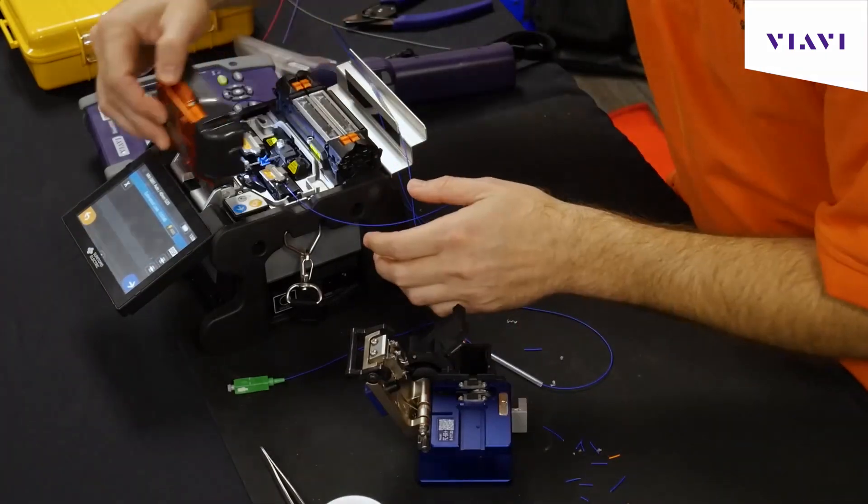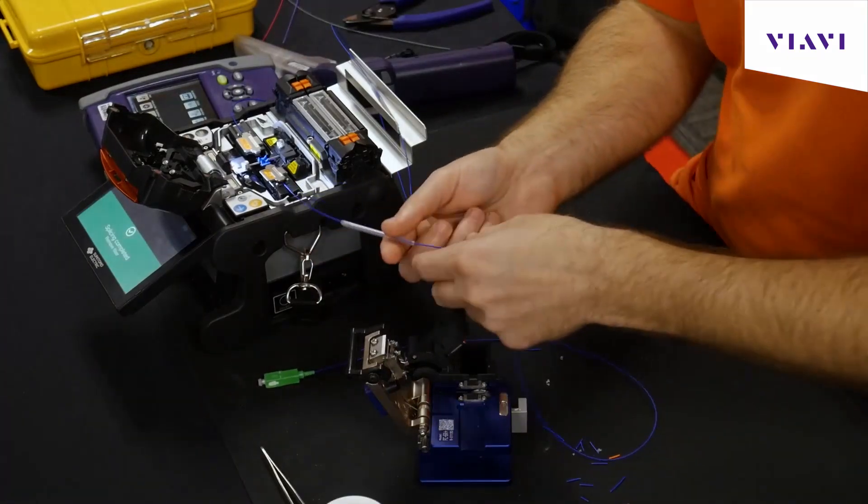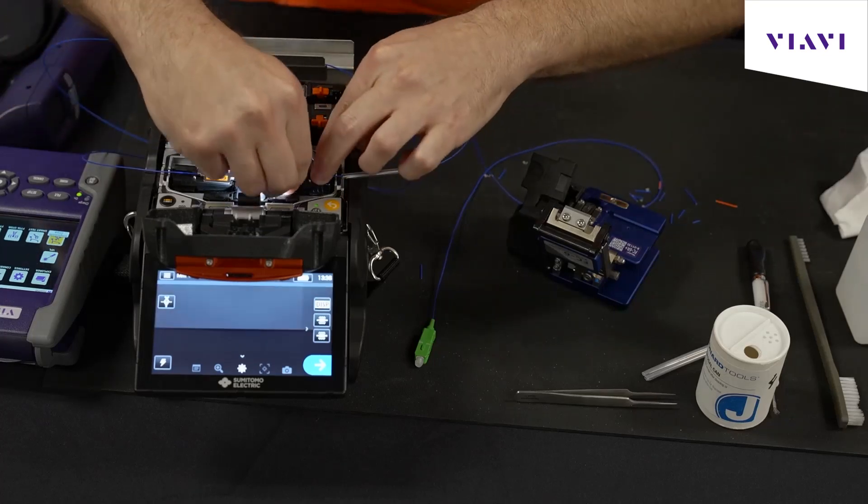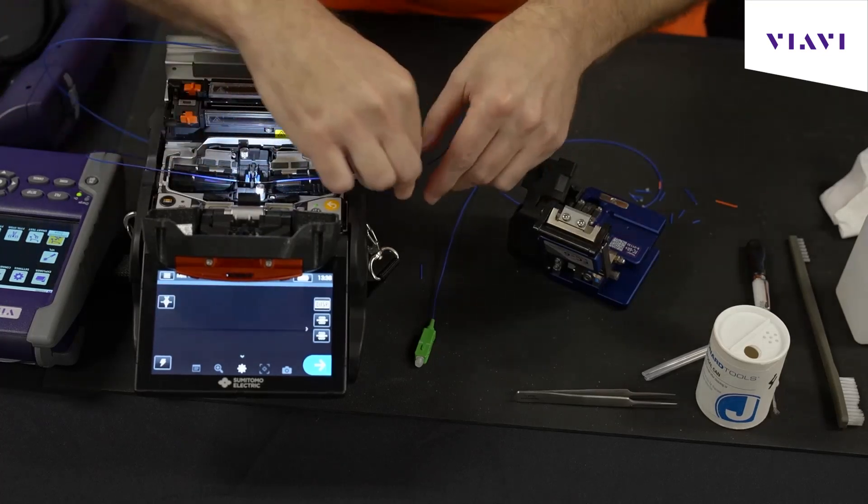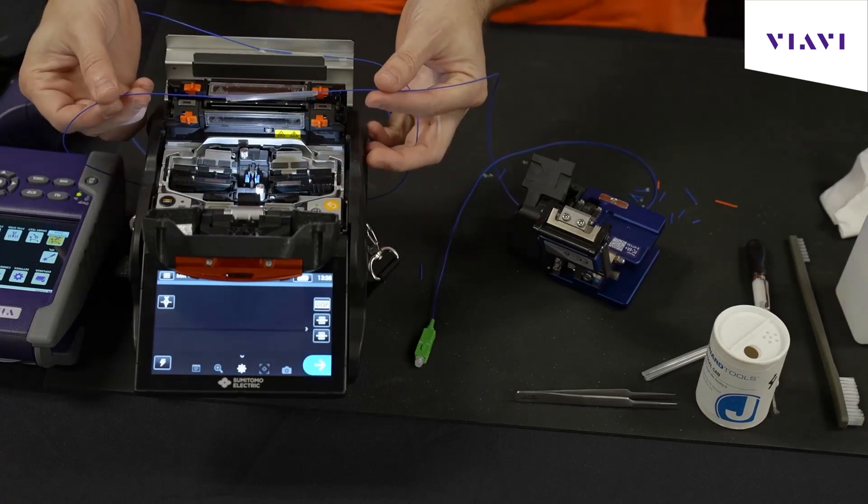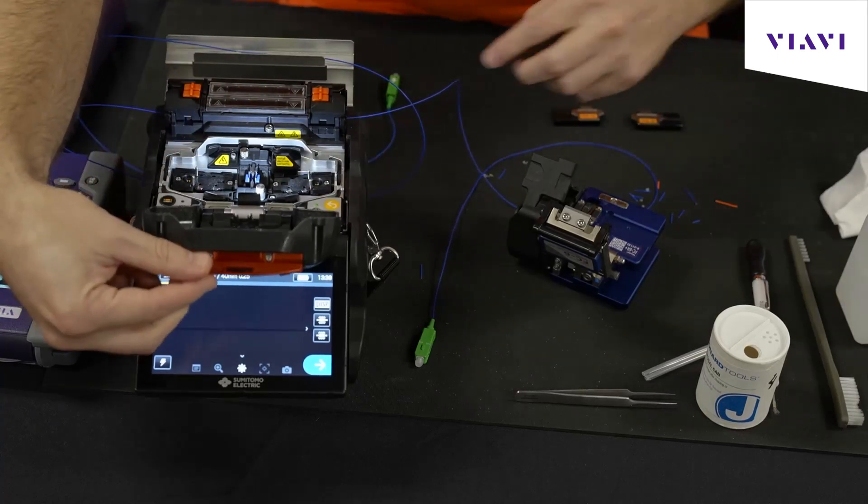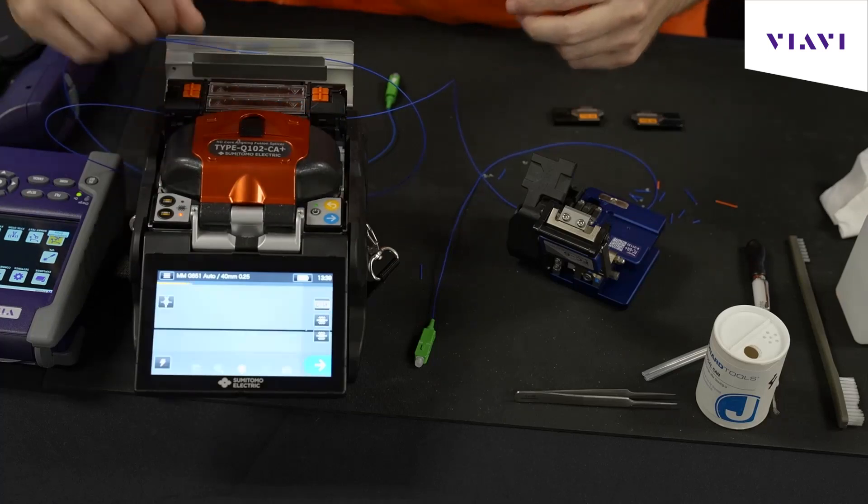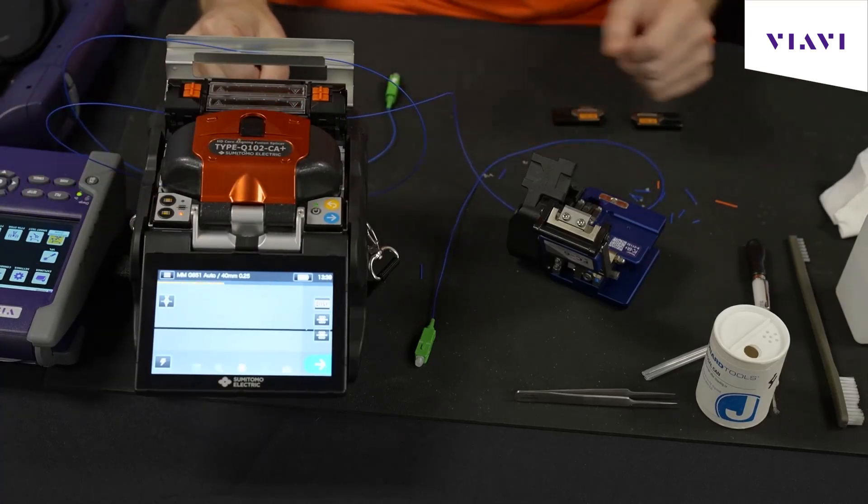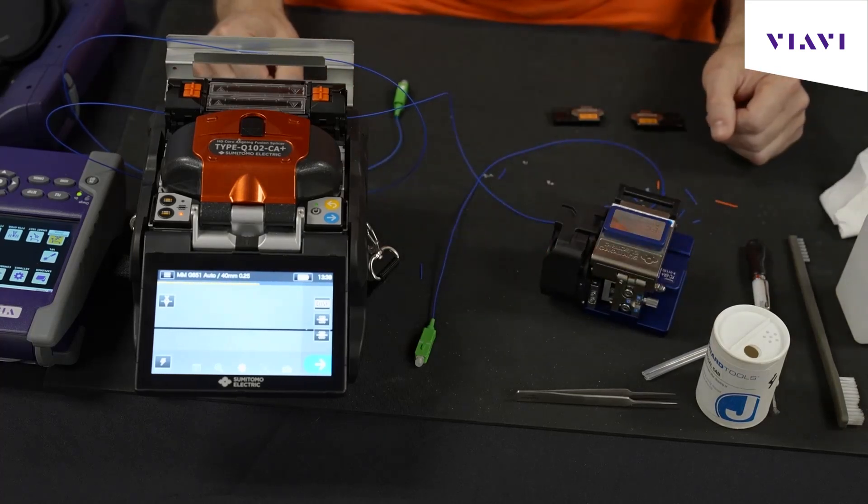And just like before, I'm going to go ahead and just load this right into the heater. Now notice this particular Sumatumo has two heating trays. So I can use both at the same time and I can splice at the same time. Very versatile. Just get it preloaded on both sides. Lightly pull. Keep your fusion door shut. Remember those precision microscopic cameras in there. Let's try to keep those clean. There's our heat. Now as soon as this is complete, our initial test setup is now ready to go.